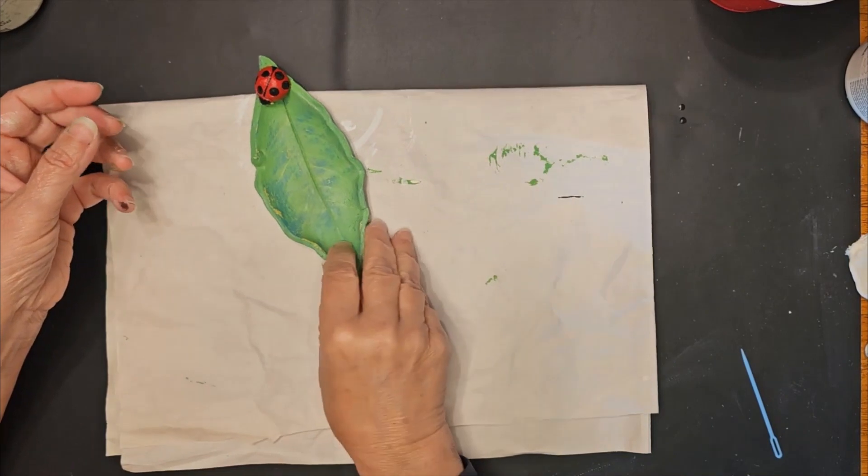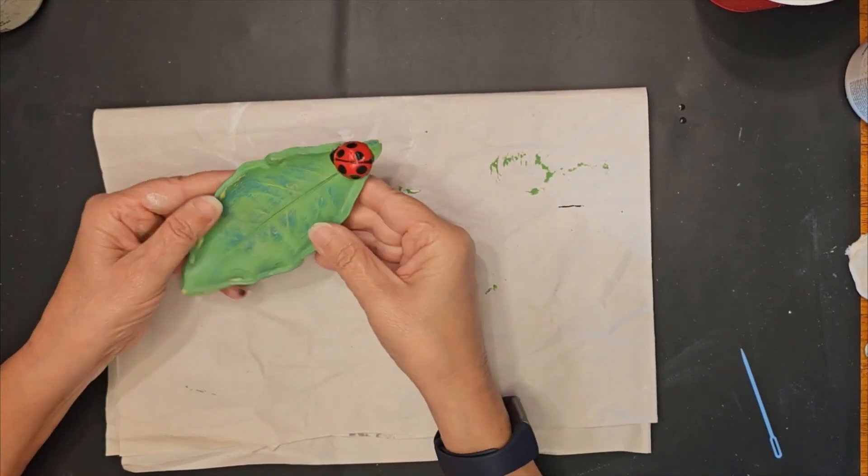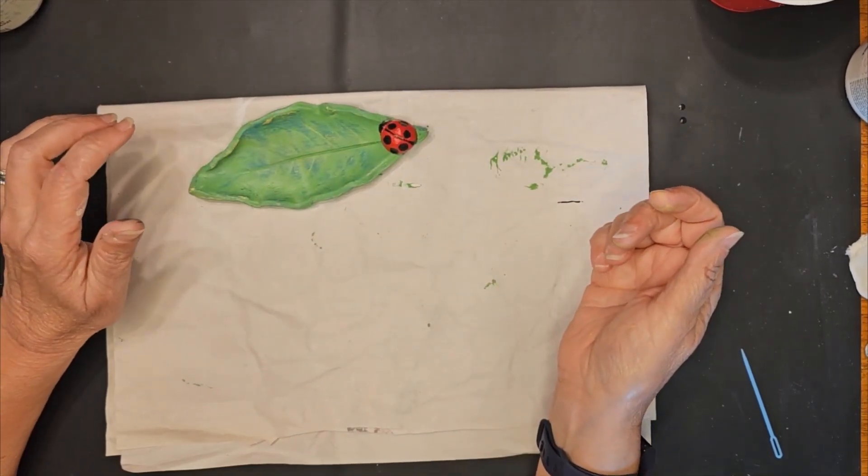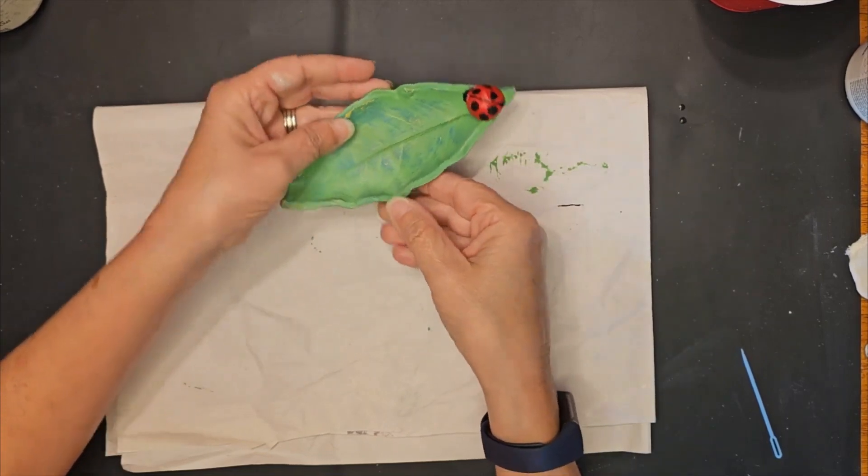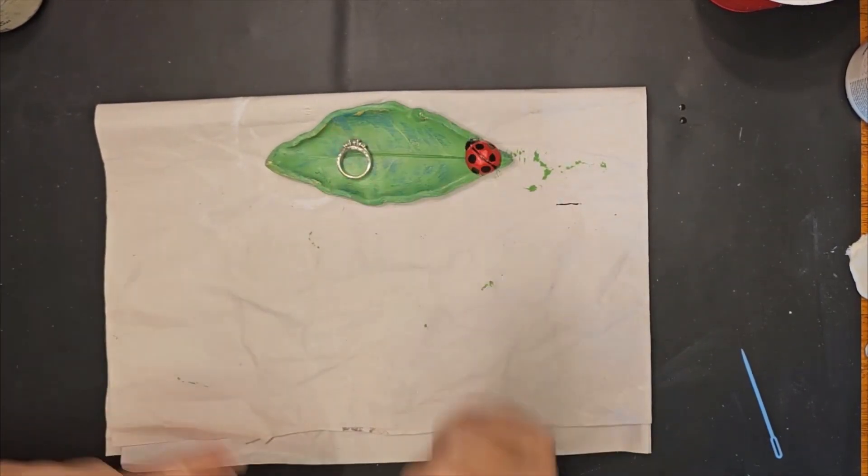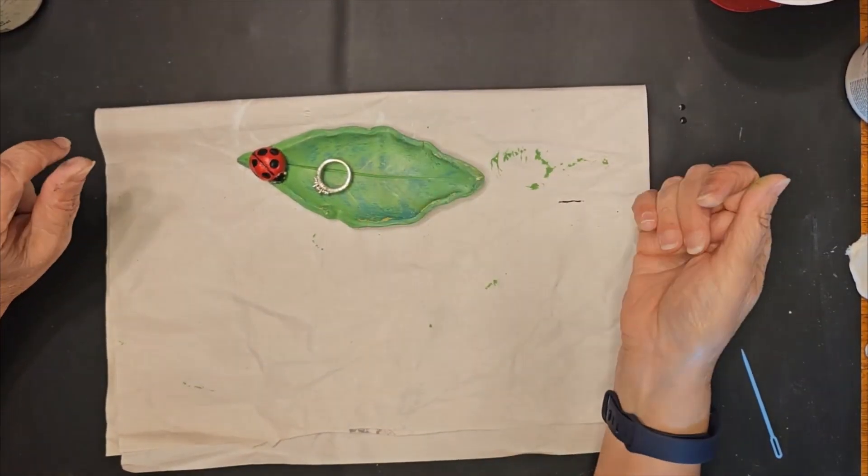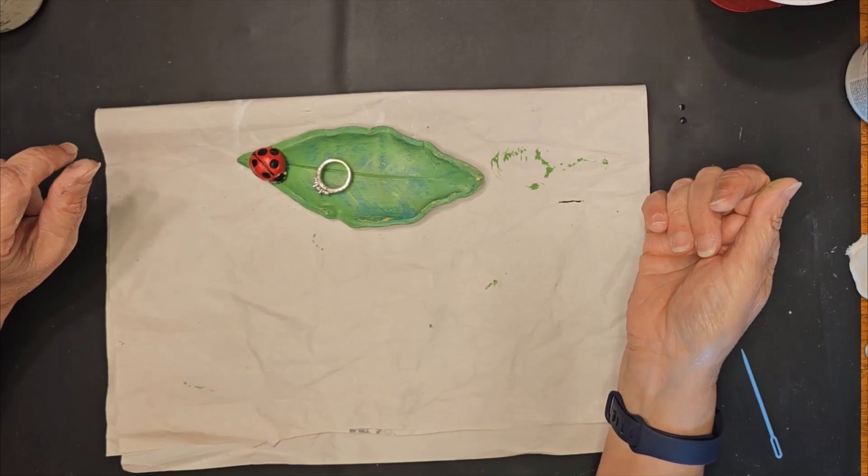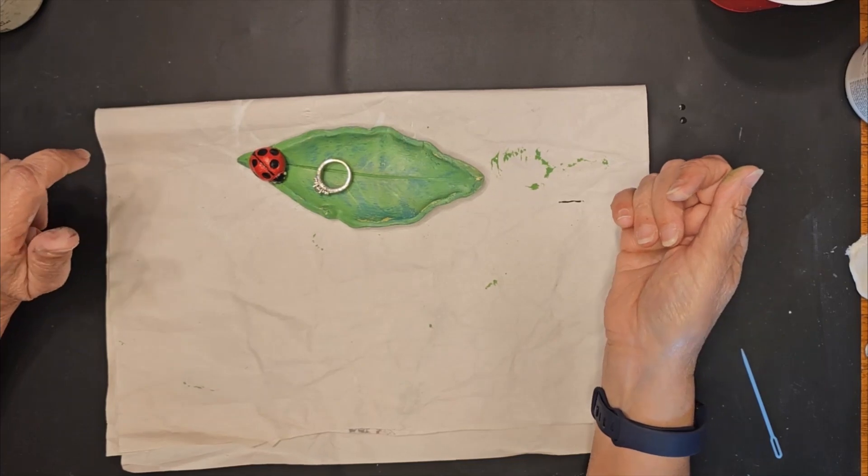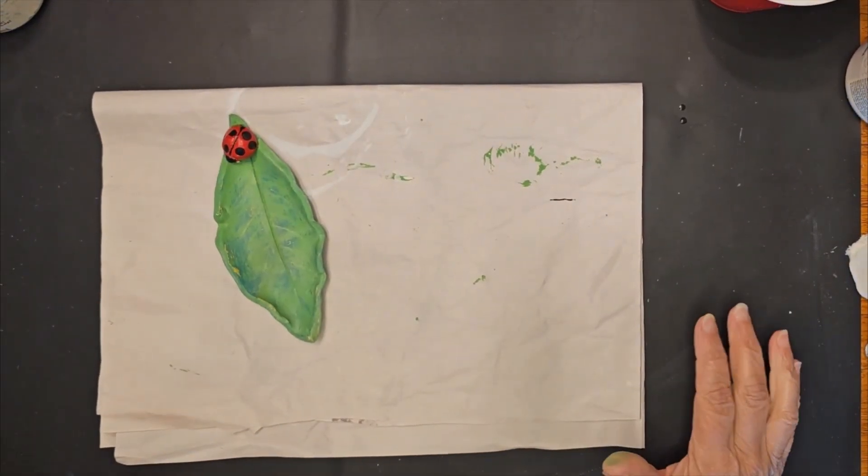I think they're cute little trinket trays to set somewhere. Maybe in the bathroom for guests to put their rings and things in, or beside a bedside table, so you could leave your jewelry in there whenever you're visiting. I don't know what all I might do with these guys, but we will see if we can find them a home. Thank you so much for joining me for this project. It was a lot of fun.